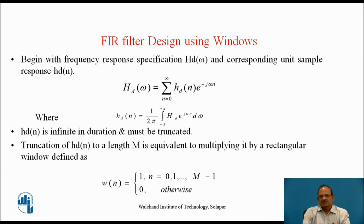The design procedure begins with the frequency response specification, i.e., hd(omega), and the corresponding impulse response hd(n), i.e., the desired frequency response hd(omega). The relation between these is: hd(omega) = summation from n=0 to infinity of hd(n) * e^(-j*omega*n), where hd(n) can be obtained by taking the inverse Fourier transform of hd(omega).